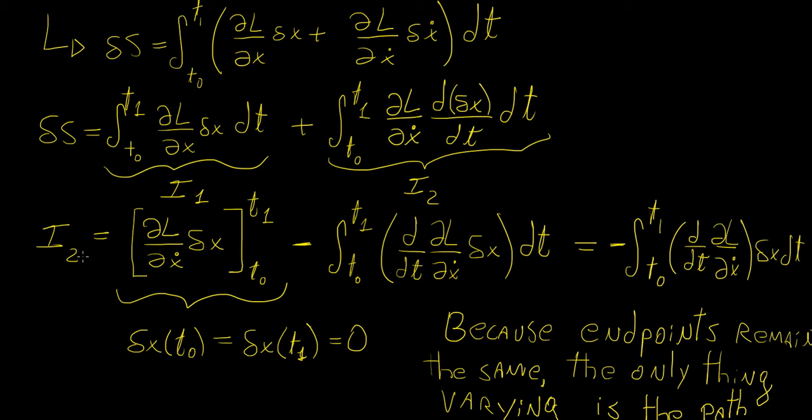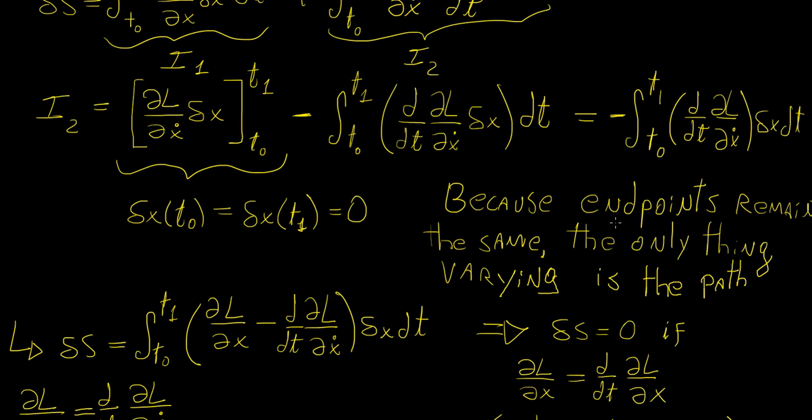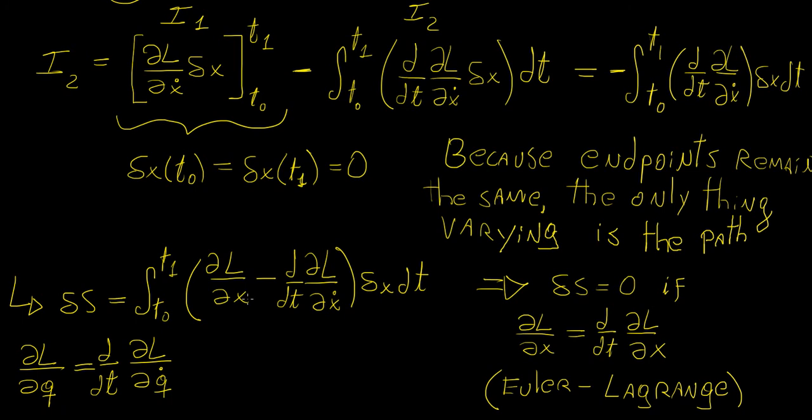And now you notice that if we put the two together, we arrive at this integral equation here. So basically we're going to have these two things times the infinitesimal change in the position or displacement times dt. And we know, how do you make an integral equal to 0? Well, you make the argument equal to 0, or the integrand equal to 0, and the only way that can be said is if this function here is equal to 0.